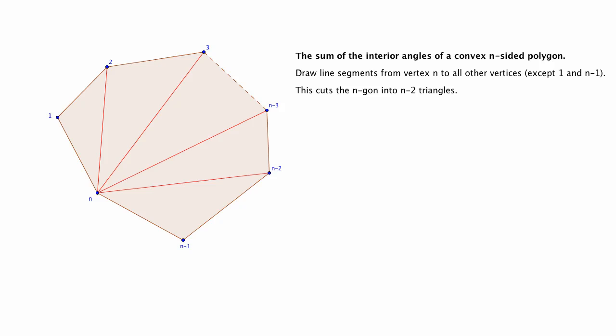Now this cuts the n-gon into n minus 2 triangles. If you can't see this, we can refer to them like this: triangle 1, n, 2; triangle 2, n, 3; triangle 3, n, 4, and so on.